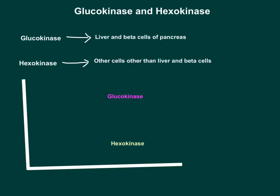Liver and beta cells of the pancreas have GLUT2 transporters on the membrane. These GLUT2 transporters are low-affinity glucose transporters with a Km of 15 millimolar, meaning liver and beta cells allow glucose inside only when blood glucose levels are high. So glucokinase works when blood glucose is high, whereas hexokinase in other peripheral cells works at all times.